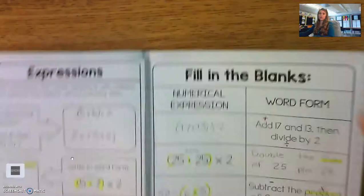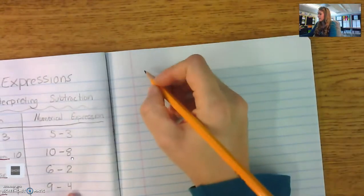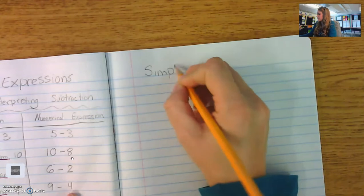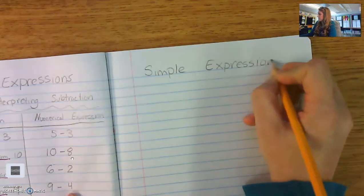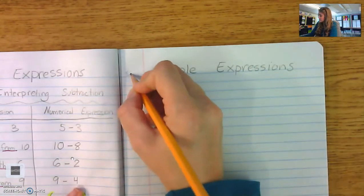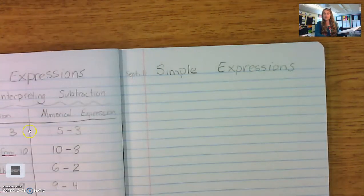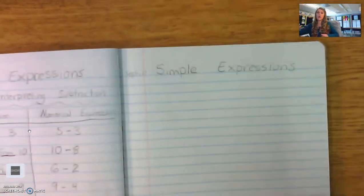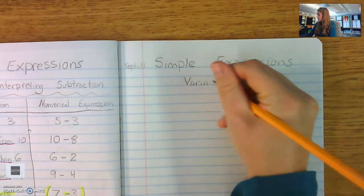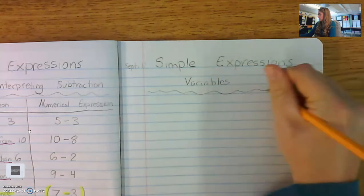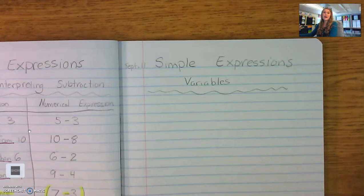Open up your math journal to the next clean page and at the top label it simple expressions and go ahead and give the date on the side. So like I said today we're going to be talking all about variables. Remember make sure your notes are nice and neat and they look like mine.